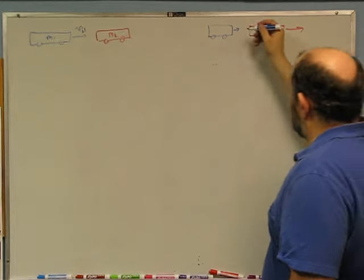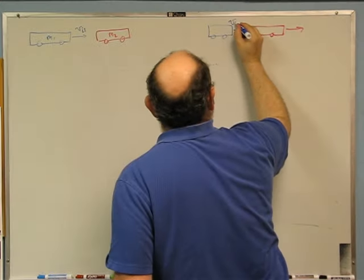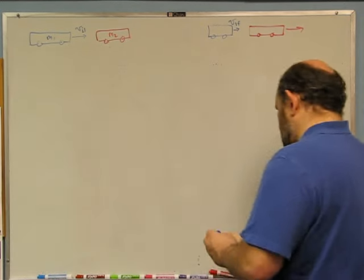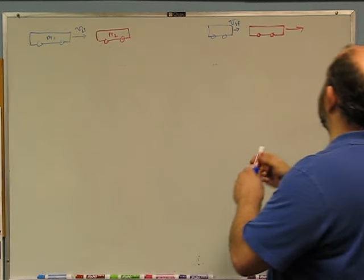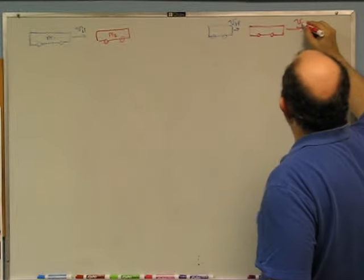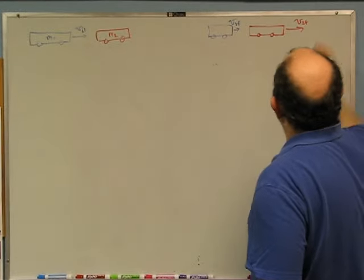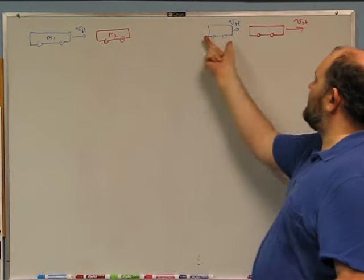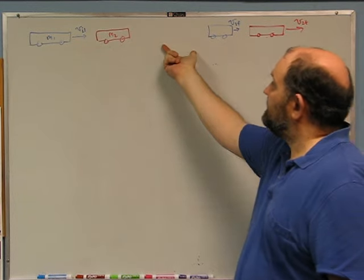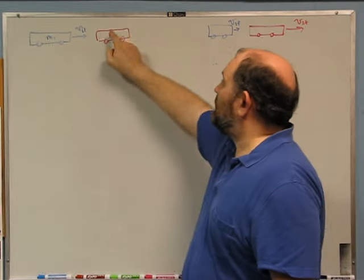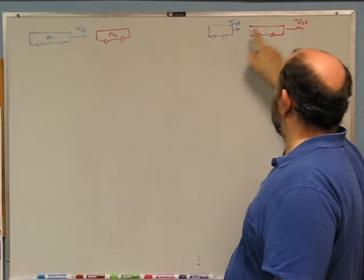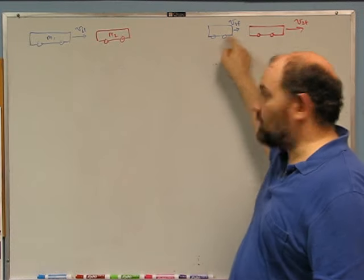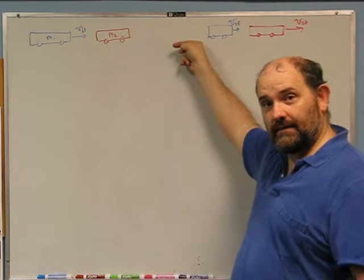We will call this v1f and we will call this one v2f. Now you may already be saying, wait — we remember from lab that this cart bounced back. And that was true. You had some weights on this cart and the incoming cart bounced back. So why are you drawing it that way? Why don't you draw it the other way?